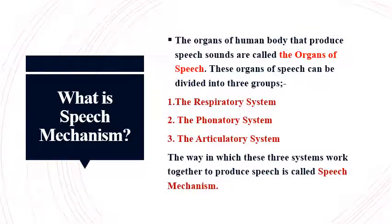When we produce speech sounds, we use speech mechanism which comprises certain organs of human body. The organs of human body that produce speech sounds are called the organs of speech. These organs of speech can be divided into three groups: the respiratory system, the phonatory system, and the articulatory system. The way in which these three systems work together to produce speech is called speech mechanism.